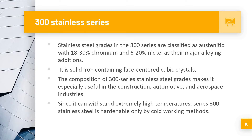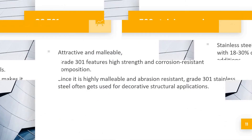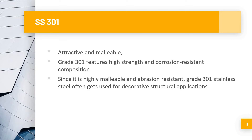The first sub-grade of the 300 series is SS 301. SS 301 is an attractive and malleable grade featuring high strength and corrosion-resistant composition. Since it is highly malleable and abrasion resistant, grade 301 stainless steel is often used for decorative structural applications.